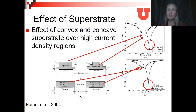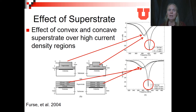We also considered the effect of the superstrate. Very few materials would truly keep out all body fluids. If some body fluid did get inside the superstrate, it would basically act like a graded material and could actually improve antenna performance. So we considered both convex and concave superstrates over the high current density regions — which, in the spiral case, were at the center of the spiral.